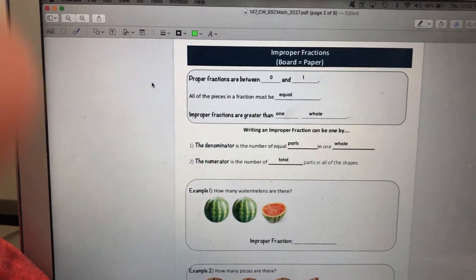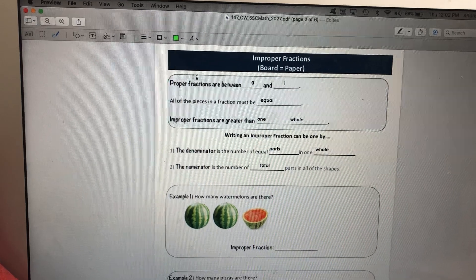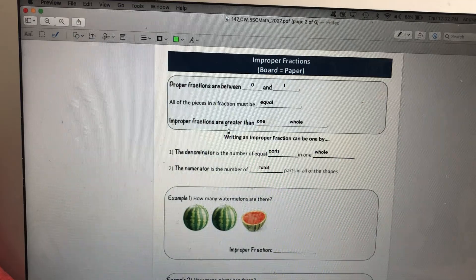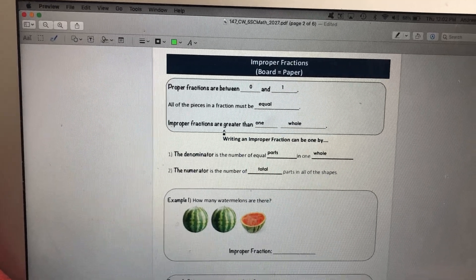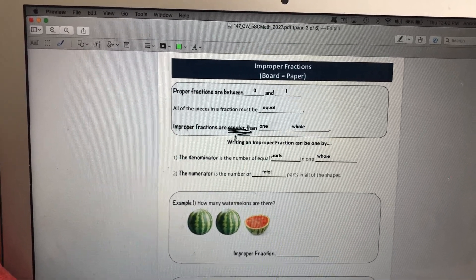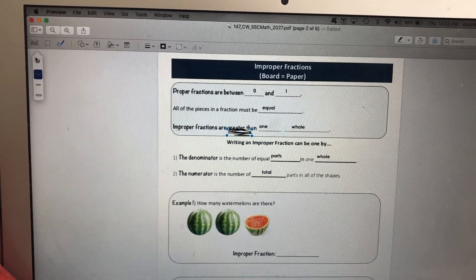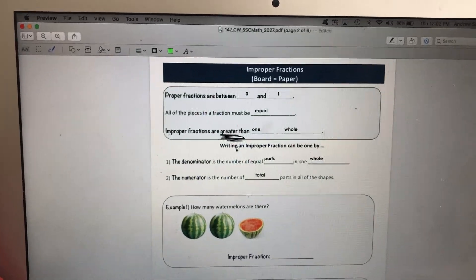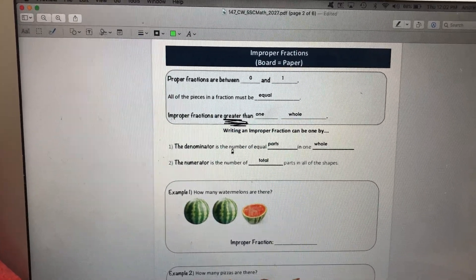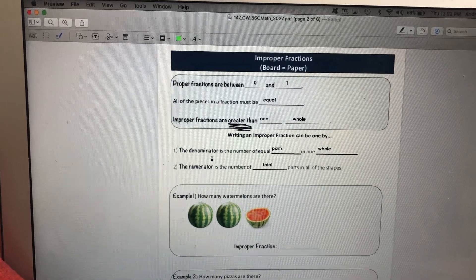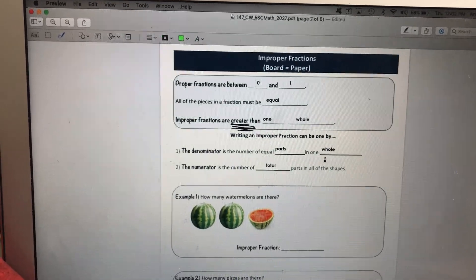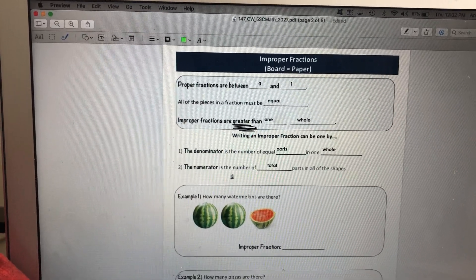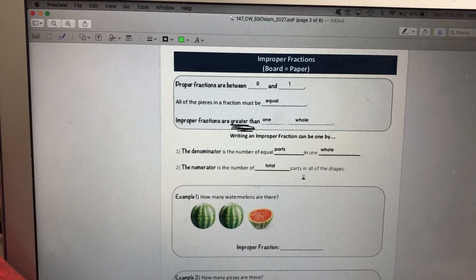Just a reminder, proper fractions are between 0 and 1. All pieces in the fraction must be equal, and improper fractions are greater than, this is the big difference, are greater than 1 whole. Today we're going to look at and write improper fractions. The first step is to, the denominator is the number of equal parts in one whole, just one. And the numerator is the number of total parts in all of the shapes.